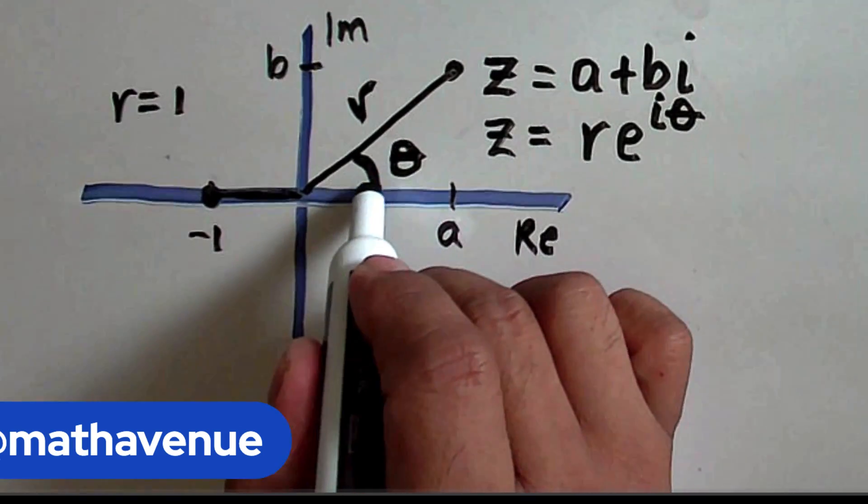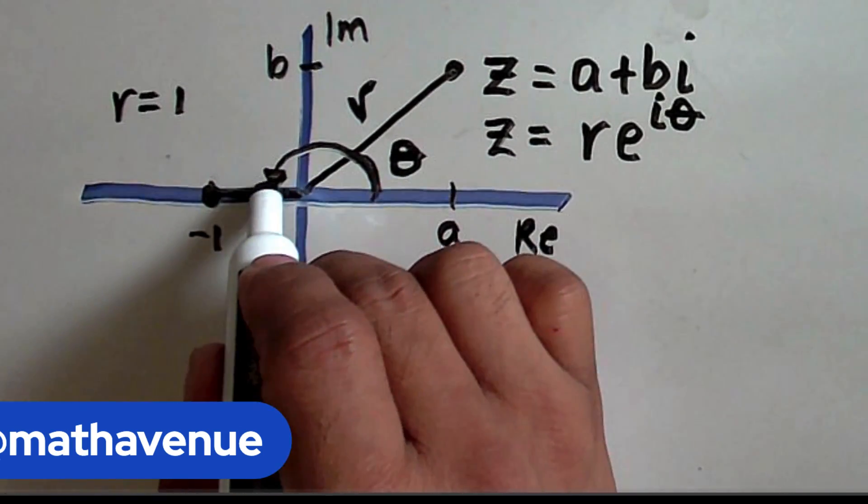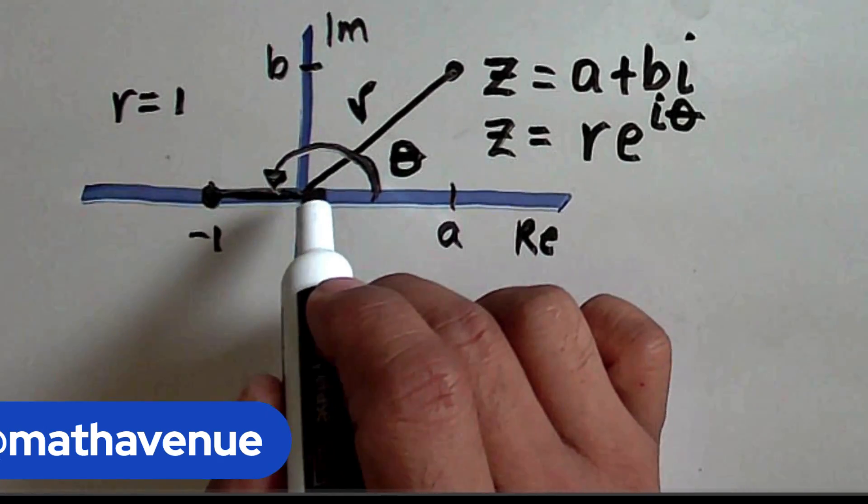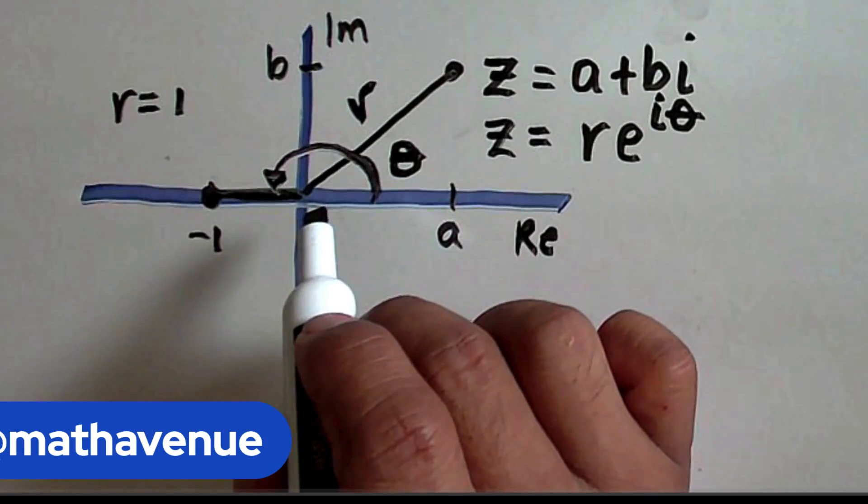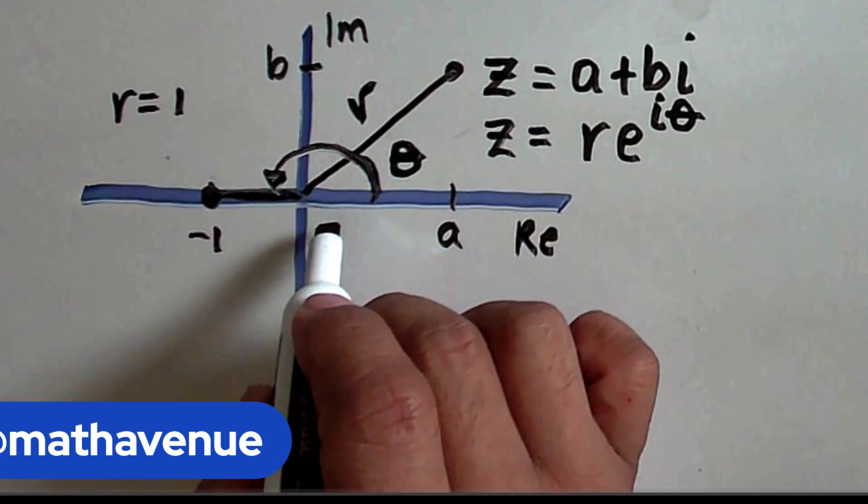We are after the absolute value of this distance. And what's the angle? From this point going to this line, that is one-half the circumference of a circle. And the circumference of a unit circle is 2π, and so one-half is equal to π.